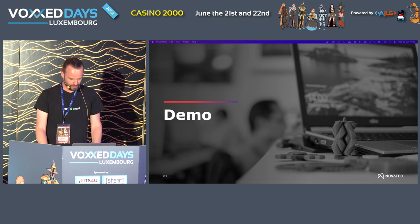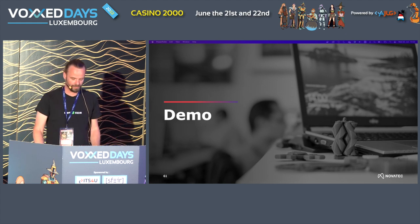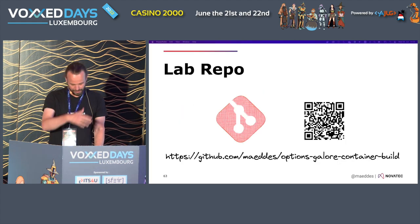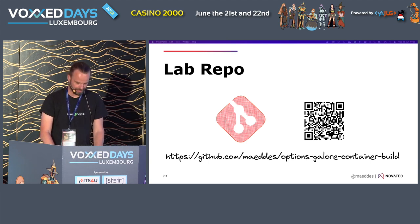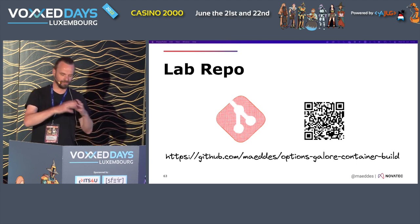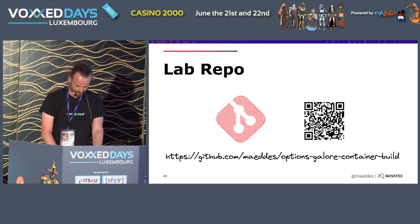I've seen solutions where companies have an internal container registry with a dedicated team that maintains the images, scans them, and keeps them clean. From that set of images, all developers can pick and choose - then they're absolutely fine. So now I have a bit of time left. I will try to show a couple of those things live that we've just seen in the slides. If you get that link - I have it pinned to my GitHub profile - you have a lab walkthrough you can do yourself. It requires a Docker installation, and then you can do various versions of Dockerfiles, the JIB command, and see how they look and what they result in.